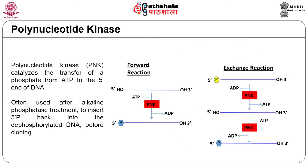Polynucleotide kinase is an enzyme that catalyzes the transfer of a phosphate from ATP to the 5 prime end of either DNA or RNA. The enzymatic activity of polynucleotide kinase is utilized in two types of reactions as shown in the figure. In the forward reaction, polynucleotide kinase transfers the gamma phosphate from ATP to the 5 prime end of a polynucleotide, which can be DNA or RNA. The target nucleotide is lacking a 5 prime phosphate either because it has been dephosphorylated or has been synthesized chemically.